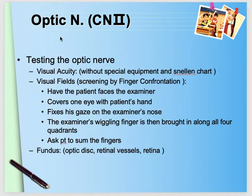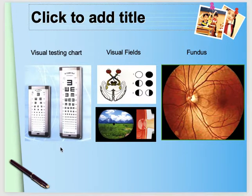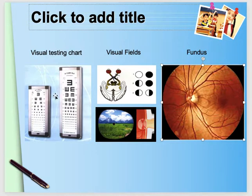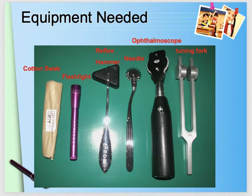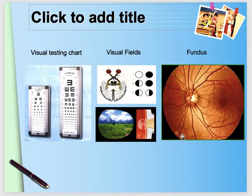The optic nerve has a very interesting type of tract — it is the nerve of vision. To test it, we check visual acuity, visual fields, and the fundus using fundoscopy. By using the ophthalmoscope we can see the back of the eye — the retina — and check the optic disc and all four quadrants. A full lecture could be given on this alone.